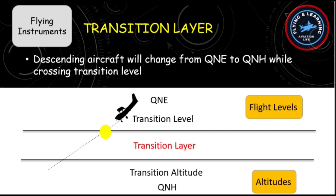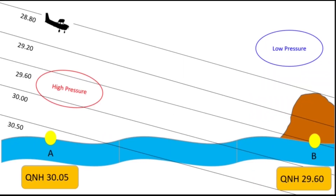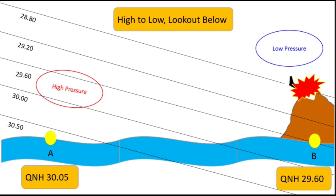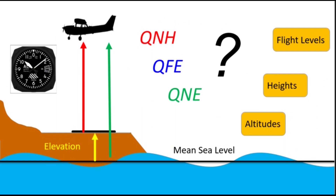Climbing aircraft will change from QNH to QNE while crossing the transition altitude, whereas descending aircraft will change from QNE to QNH while crossing the transition level. It is very important to keep updating local QNH from time to time. For example, if an aircraft moving from point A to point B — both destinations having different QNH values — does not update its QNH from 30.05 to 29.60, it will keep losing altitude, which can be extremely dangerous.